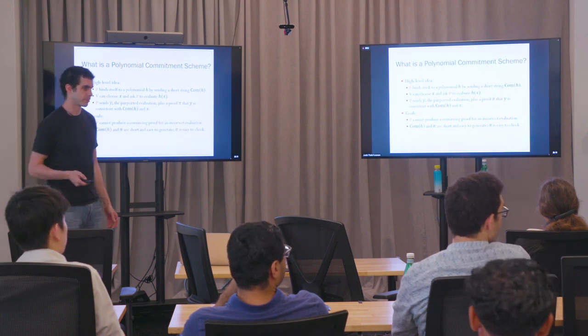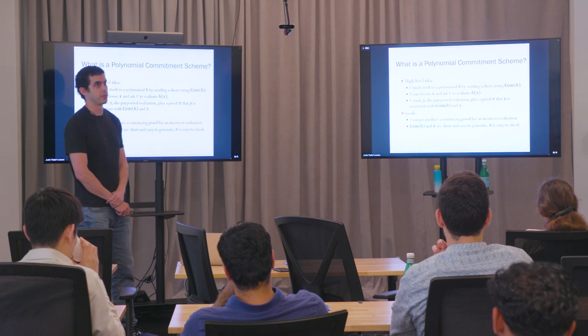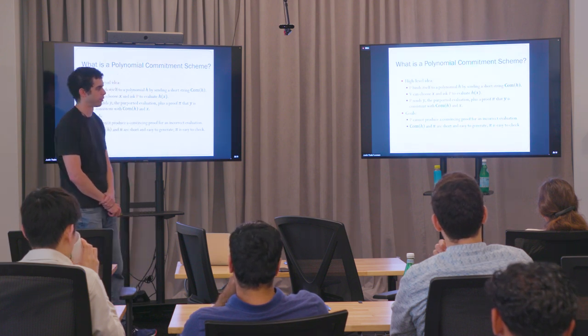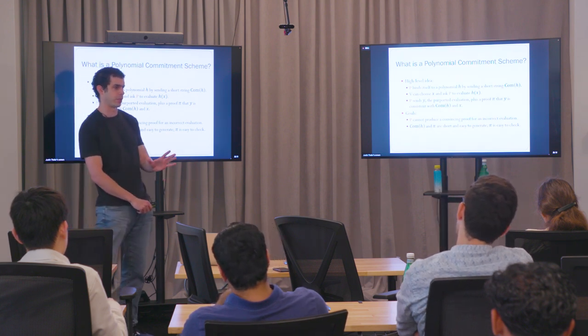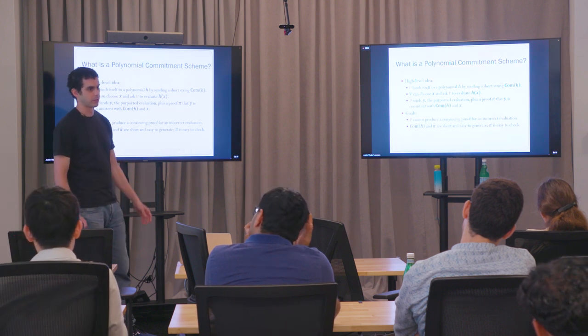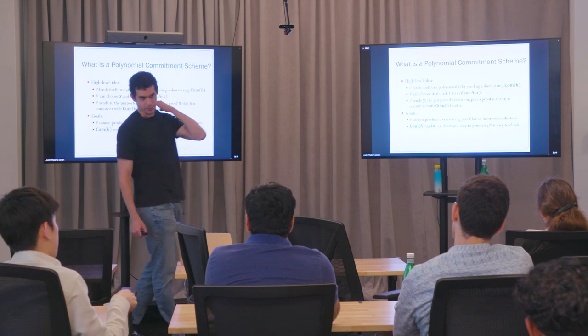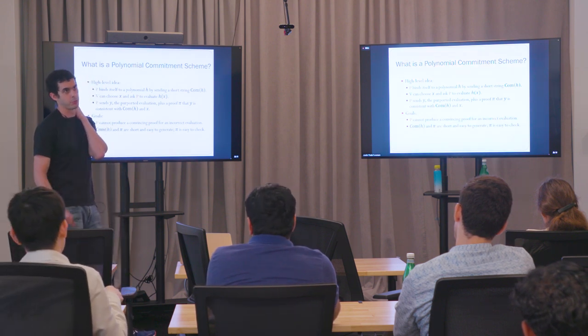After the initial polynomial commitment message, you need a protocol with a short transcript. That's generally a small number of random challenges from the verifier — in the SNARK, those challenges are obtained via Fiat-Shamir, meaning by hashing earlier messages, so there's no interaction. The prover's responses are typically low-degree univariate polynomials — just a handful of field elements to write down all coefficients. The SNARKs discussed today are based on multivariate polynomial techniques: logarithmically many rounds with roughly three field elements sent per round.